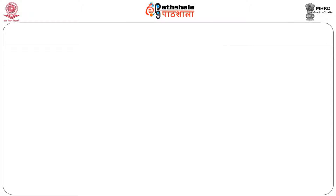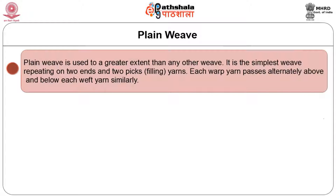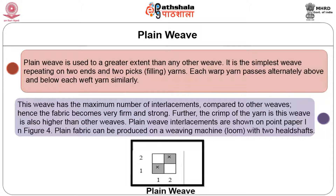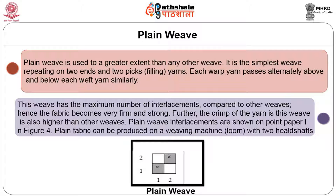Plain weave is used to a greater extent than any other weave. It is the simplest weave, repeating on two ends and two picks. Each warp yarn passes alternately above and below each weft yarn. This weave has the maximum number of interlacements compared to other weaves, making the fabric stronger. Further, the crimp of the yarn in this weave is also higher than other weaves. Plain weave interlacements are shown on point paper in figure 4.